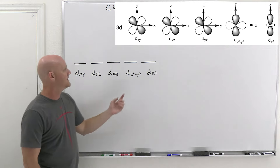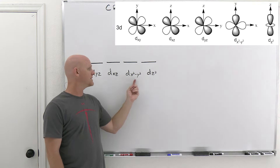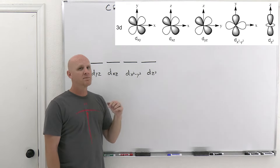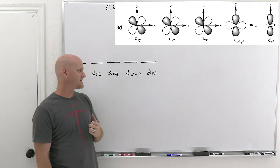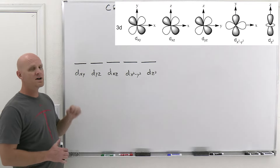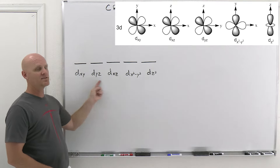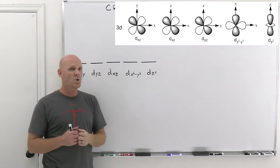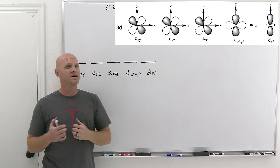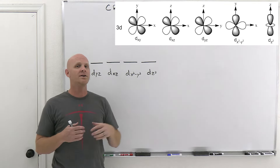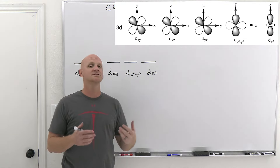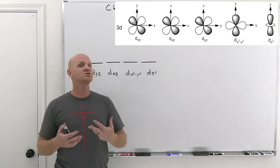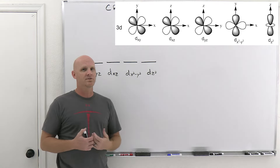dx²−y² has four lobes in the xy plane right on the x and y axes. dz² has most of its electron density on the z axis. So we have two distinct groups: three orbitals (dxy, dyz, dxz) with density between the axes, and two orbitals (dx²−y², dz²) with density on the axes. In an octahedral complex, ligands bind right on the axes; in tetrahedral, they bind in between the axes.